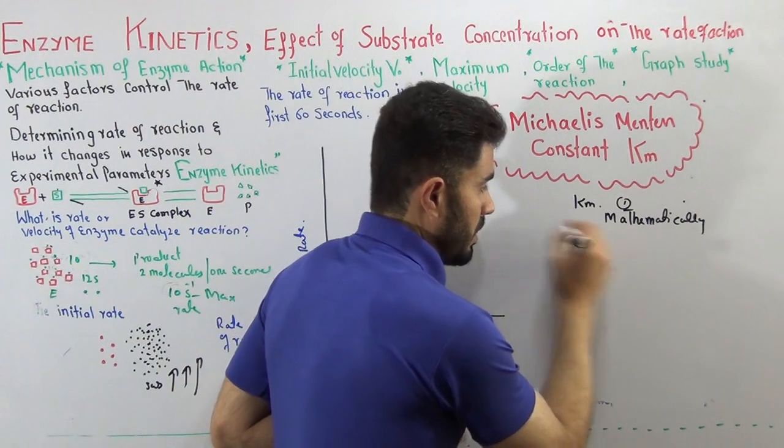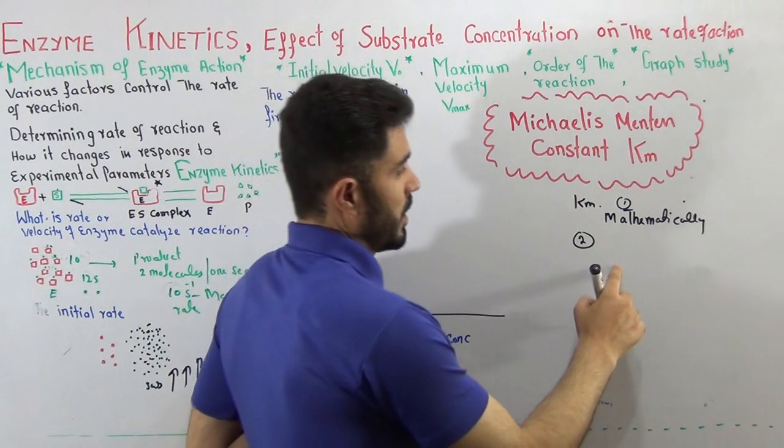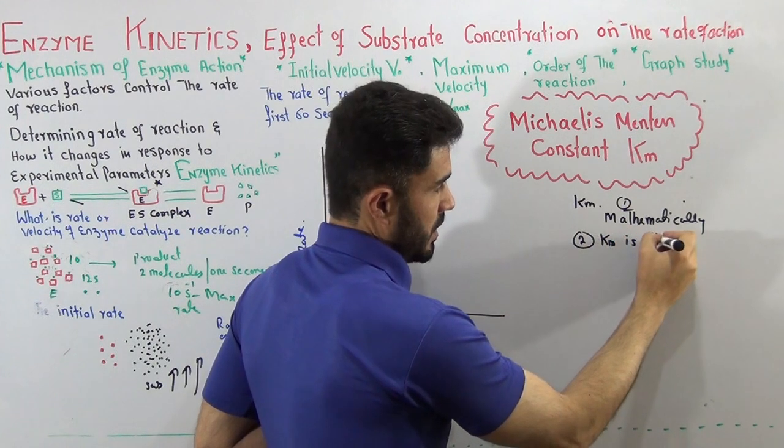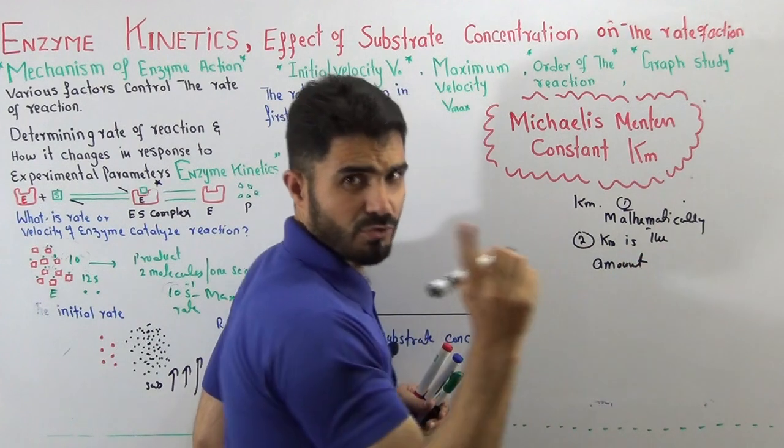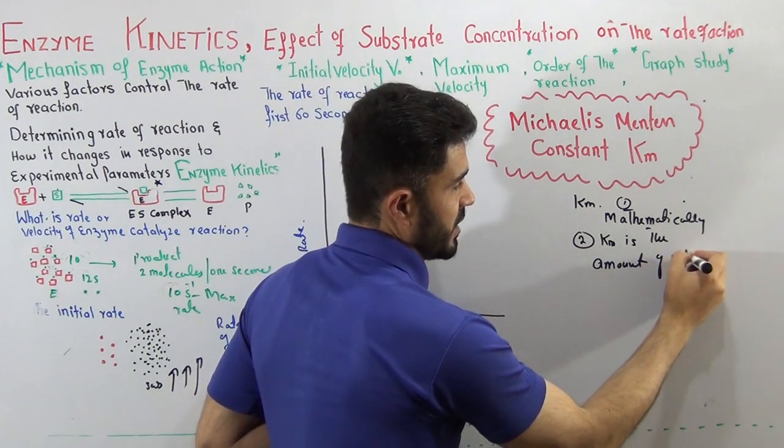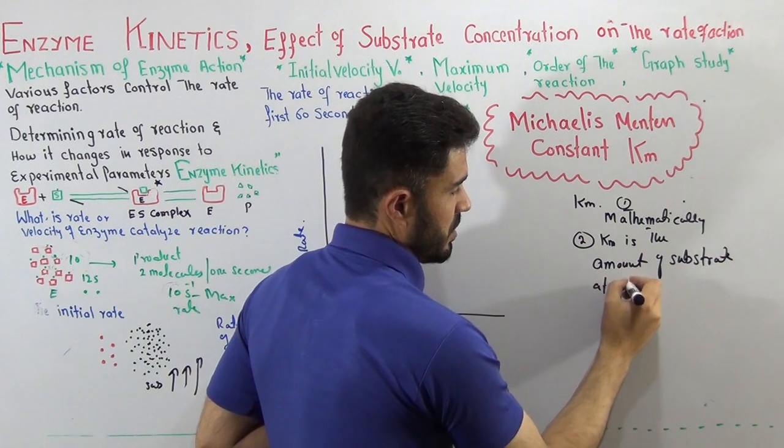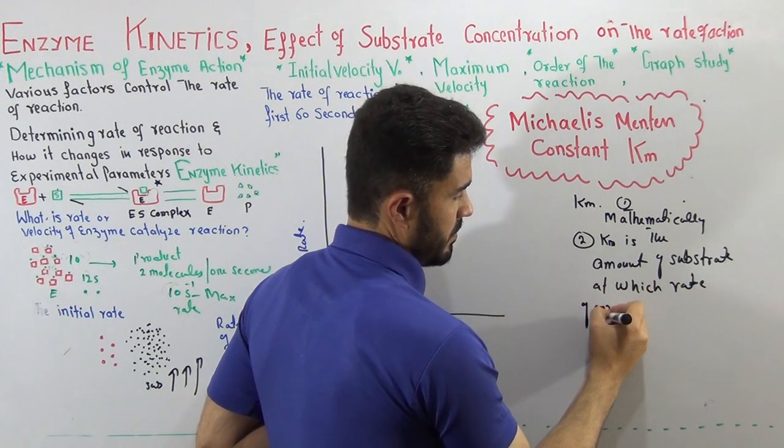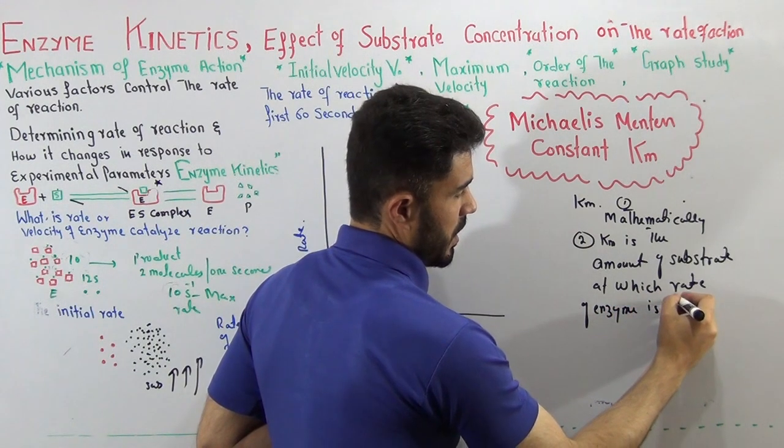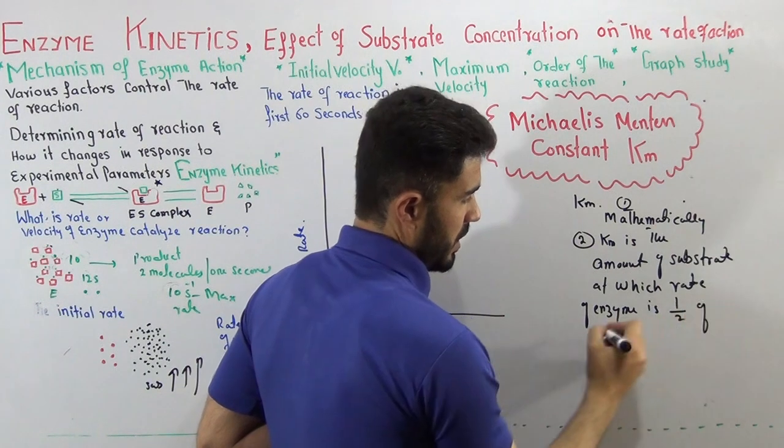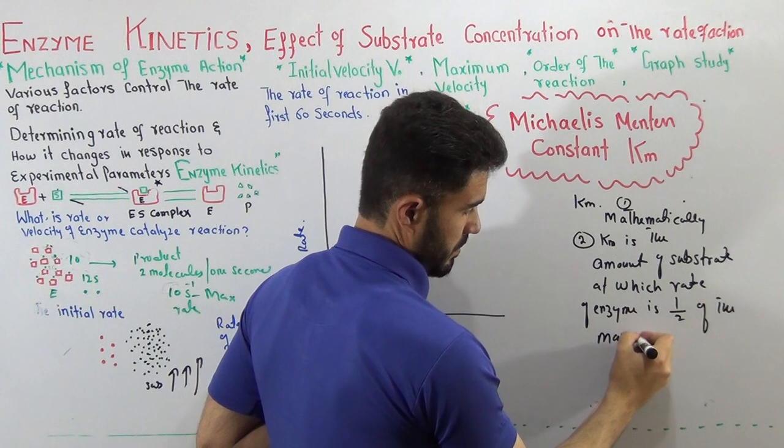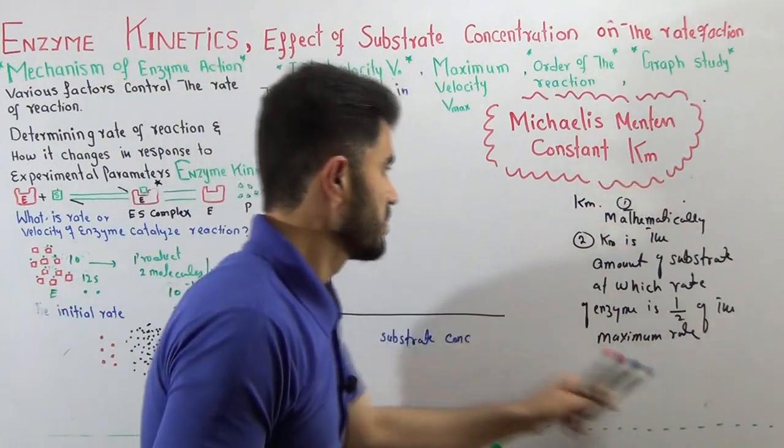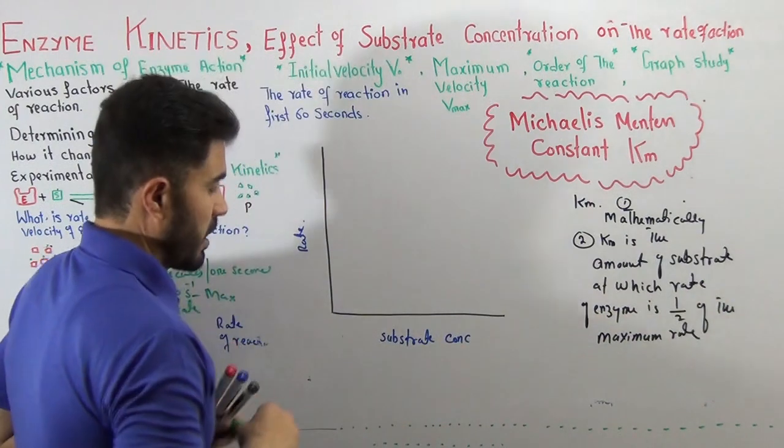Definition number two: Km is the amount of substrate at which the rate of enzyme is half of the maximum rate. This is the second definition I would like to share with you people today.